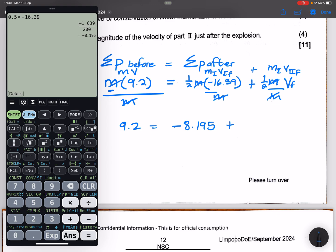Plus a half of vf. Now let's take this to the other side, so that's 9.2 plus 8.195.